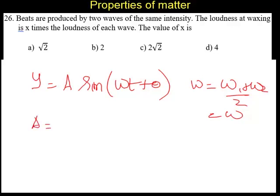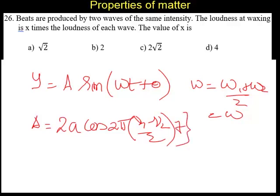That amplitude is given by the formula 2A cos(2π(ν₁ - ν₂)/2·t). This is the expression for the amplitude. The maximum value of this amplitude, if we take the cosine value equal to 1, is 2A.